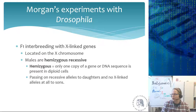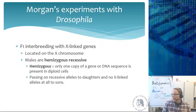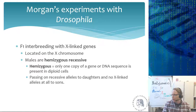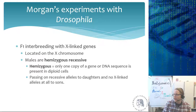Males are hemizygous, meaning they only have one copy of a gene or DNA sequence in a diploid cell. Males have only one X chromosome and a Y chromosome, so males are more likely to pass on recessive alleles to daughters. They do not pass on any X-linked alleles to their sons at all, because they pass on the Y chromosome to their sons.